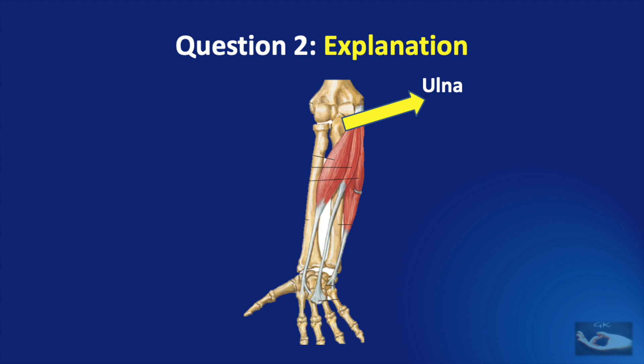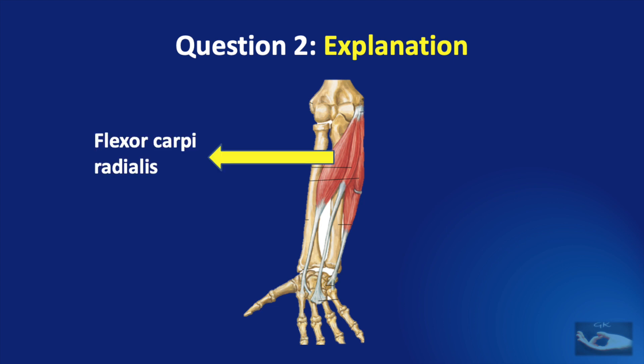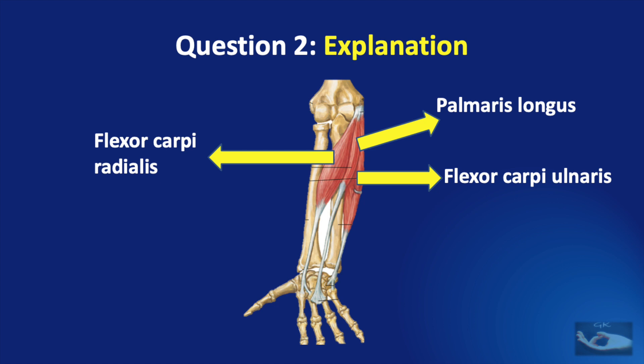In the picture, you can identify the ulnar and hence the medial epicondyle, and the mass of muscles arising from the medial epicondyle are the flexor muscles. The three superficial flexor muscles are shown: the flexor carpi radialis, the palmaris longus, and the flexor carpi ulnaris.